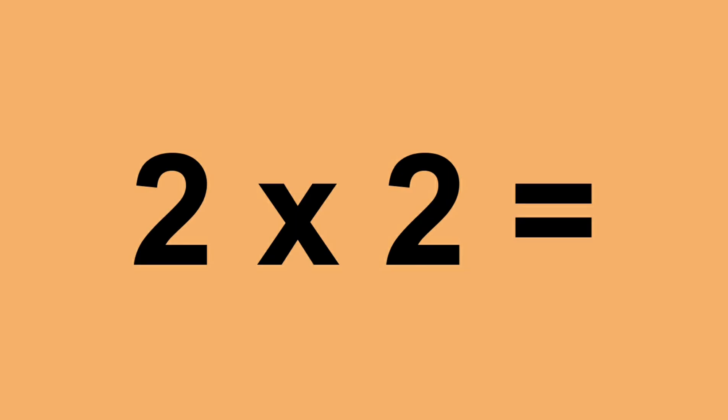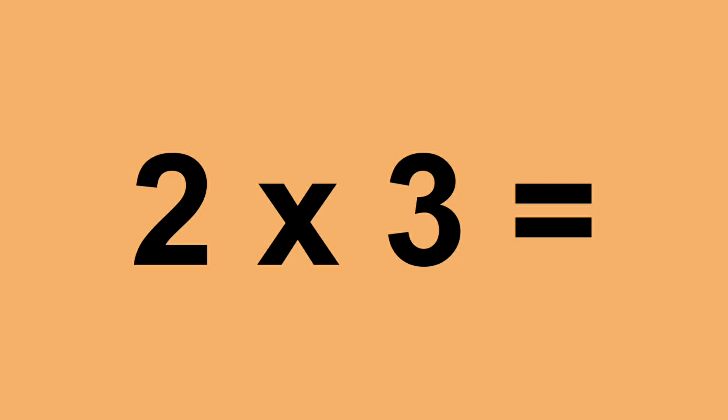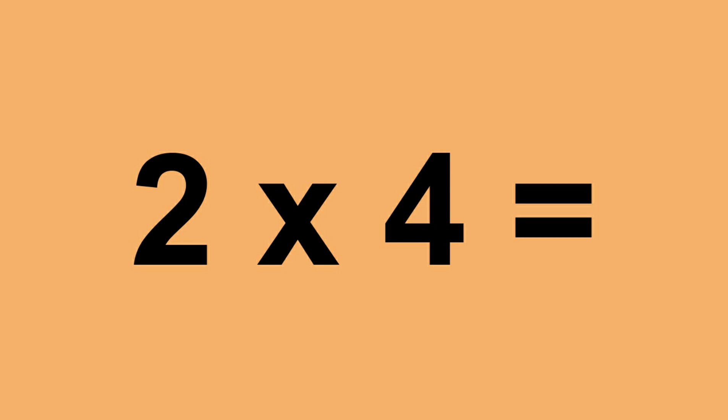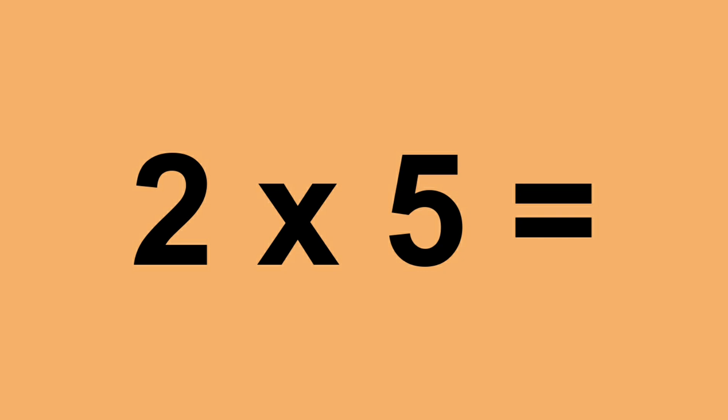Two times two equals four. Two times three equals six. Two times four equals eight. Two times five equals ten.